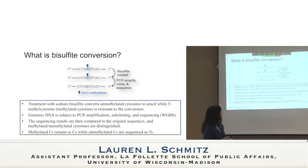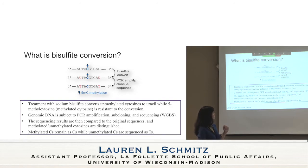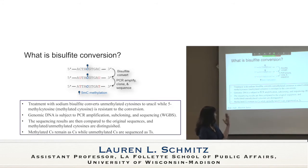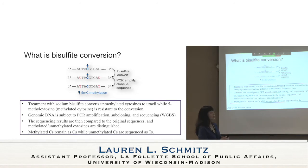What is bisulfate conversion? Treatment with sodium bisulfate converts unmethylated cytosines to uracil, while the 5-methyl cytosines — the methylated cytosines — are resistant to conversion. After conversion, PCR amplification and cloning of the sequence occurs, and the unmethylated C's that were turned to uracils then get read as T's in that cloning procedure. These sequencing results are compared to the original sequences, and methylated versus unmethylated cytosines are distinguished based on that.